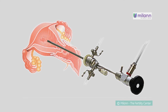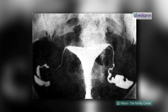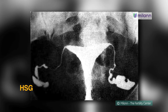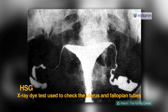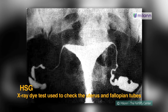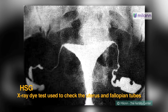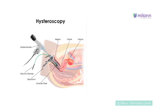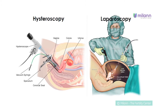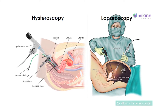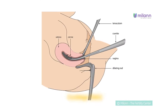Diagnostic hysteroscopy is also used to confirm results of other tests such as hysterosalpingography, or HSG. HSG is an x-ray dye test used to check the uterus and fallopian tubes.